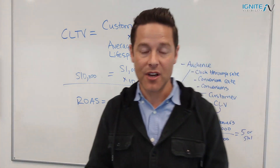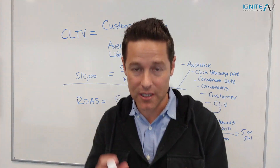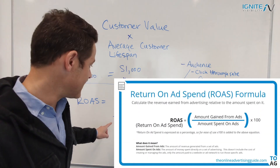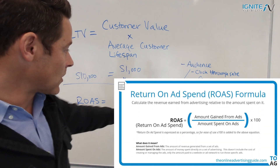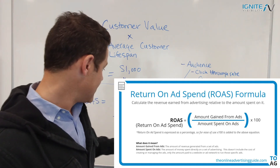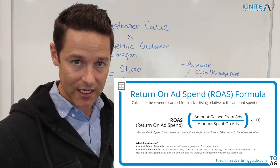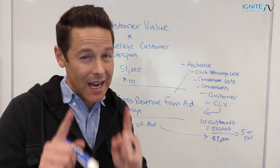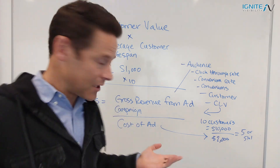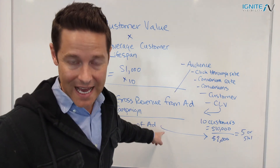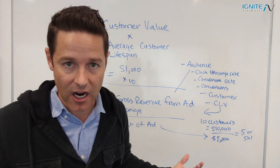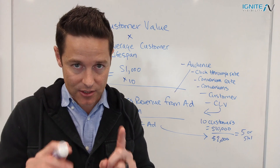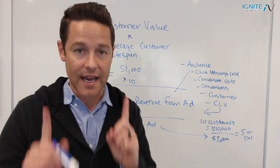Let's take that a step further and talk about why that's really important in marketing and advertising. There's a metric called return on ad spend, calculated as gross revenue from an ad campaign divided by the cost of the ad. That's a great benchmark, but how does it play into customer lifetime value? You can't accurately understand the gross revenue from an ad campaign if you're just assigning an arbitrary number to it — like saying a conversion is worth $100.